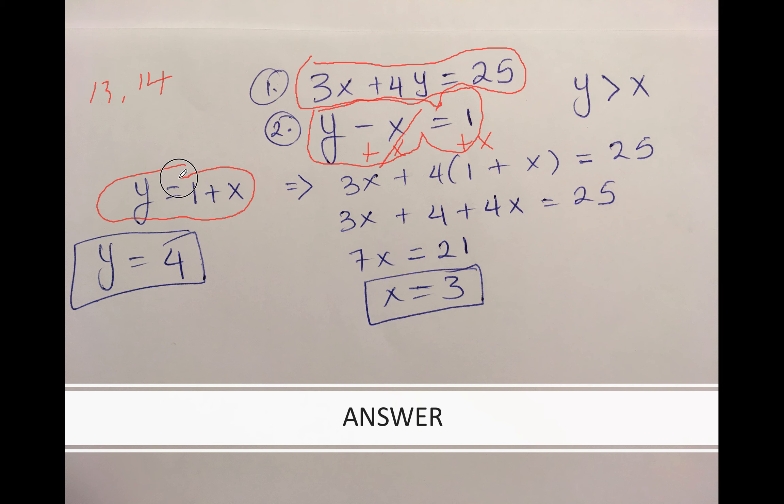What do I do? I'm going to plug this y into here. I have 3x + 4(1 + x) = 25. So 3x comes down, I distribute: 4 times 1 is 4, 4 times x is 4x. I add 3x + 4x which gives me 7x.